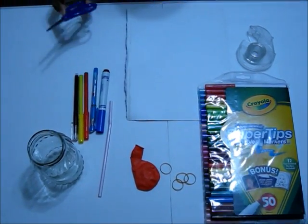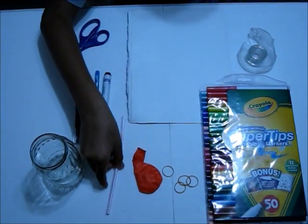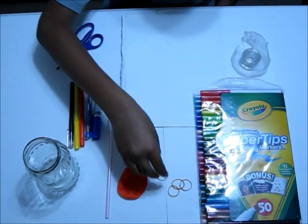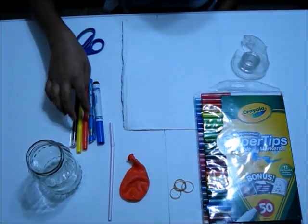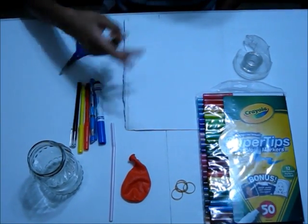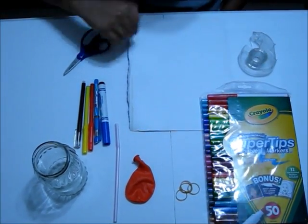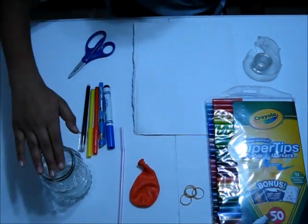The things you will need are cardboard, a pair of scissors, a drinking straw, a balloon, a few rubber bands, markers, two pens whichever color you like, tape, and a jar.